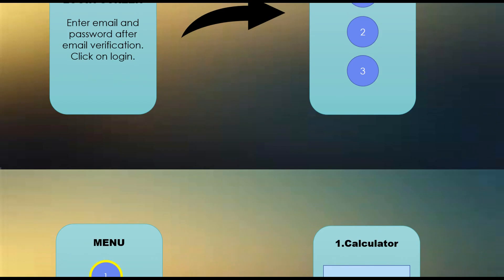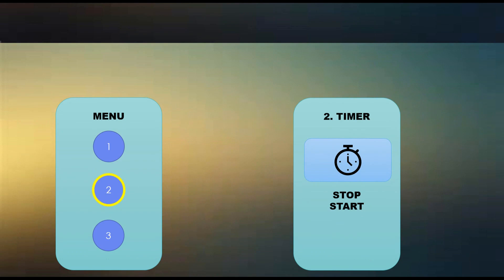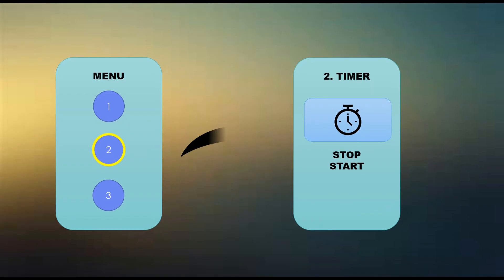The first option is for the calculator. There will be all options — multiplication, division, addition, subtraction, everything. Then the second option is for the timer. You feed the time and then you can start and stop it, and you get a notification also.